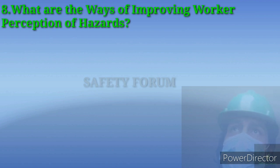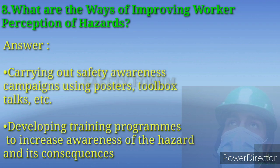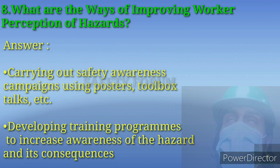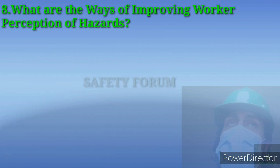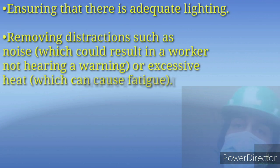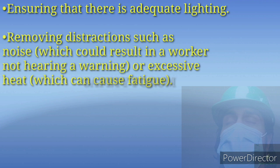The eighth question: What are the ways of improving workers' perception of hazards? Ensure that adequate lighting is provided for doing particular work. Also, remove distractions such as noise — which could result in a worker not hearing warnings or dangers — or excessive heat which can cause fatigue.